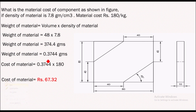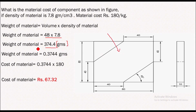We know the material volume is 48 centimeter cube and the density of material is 7.8 gram per centimeter cube. On solving — weight equals volume into density — we get 374.4 gram as the weight of this material.